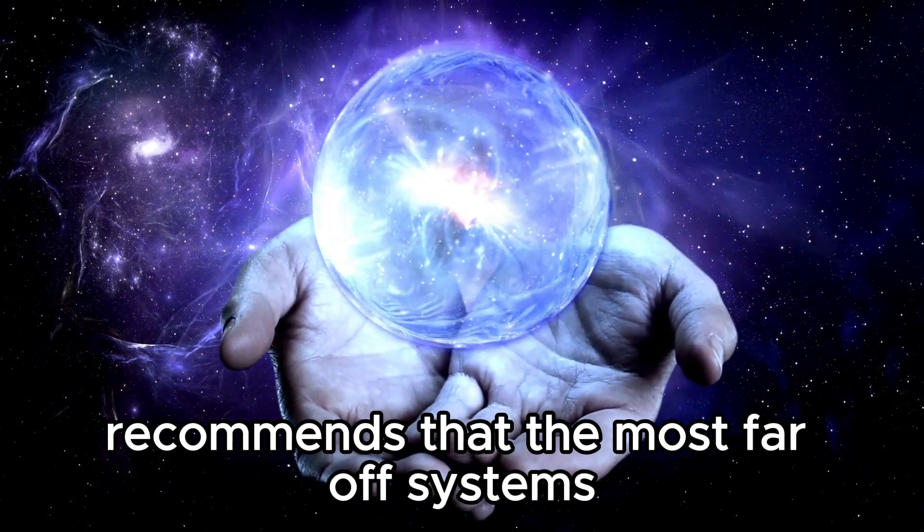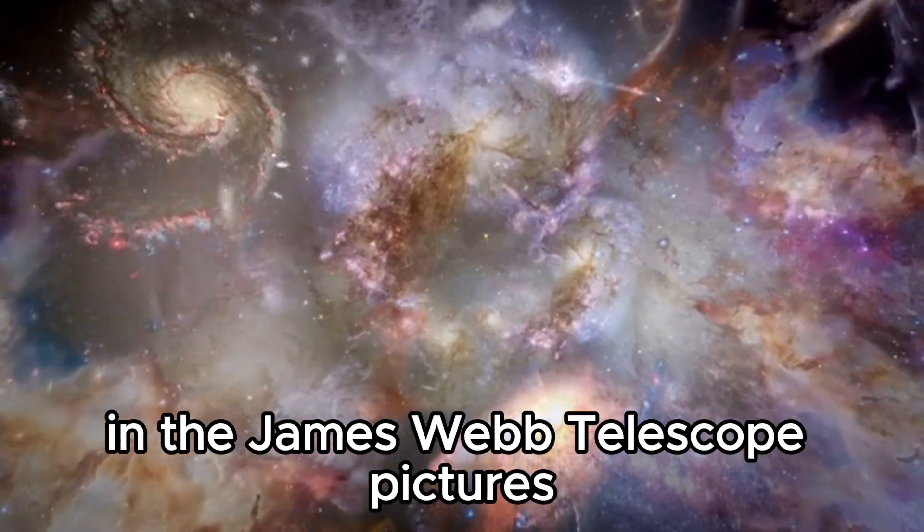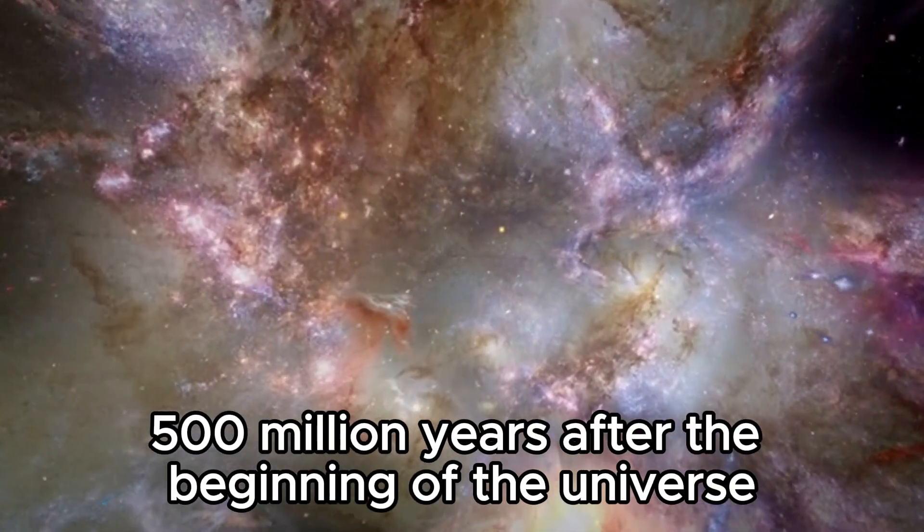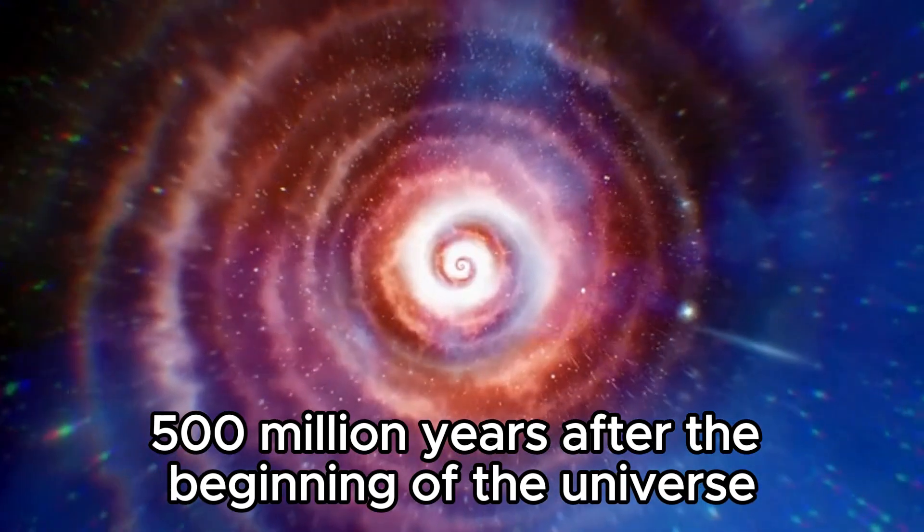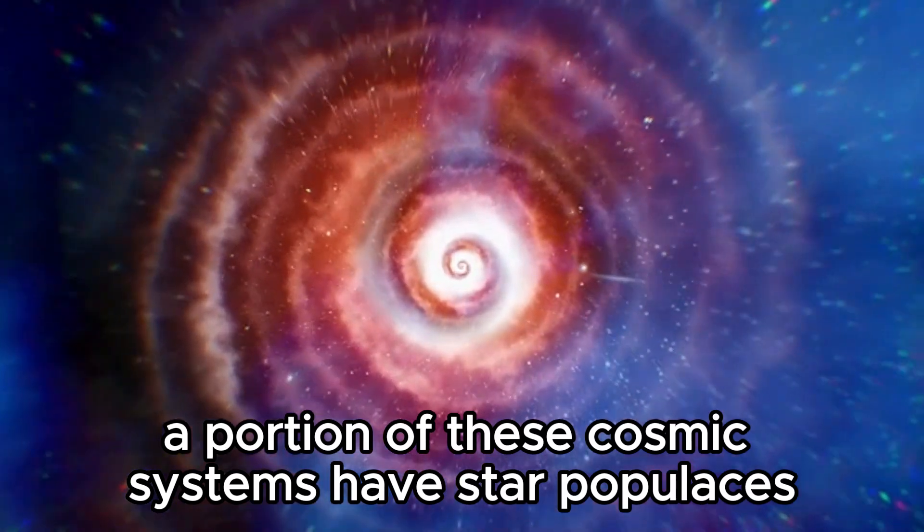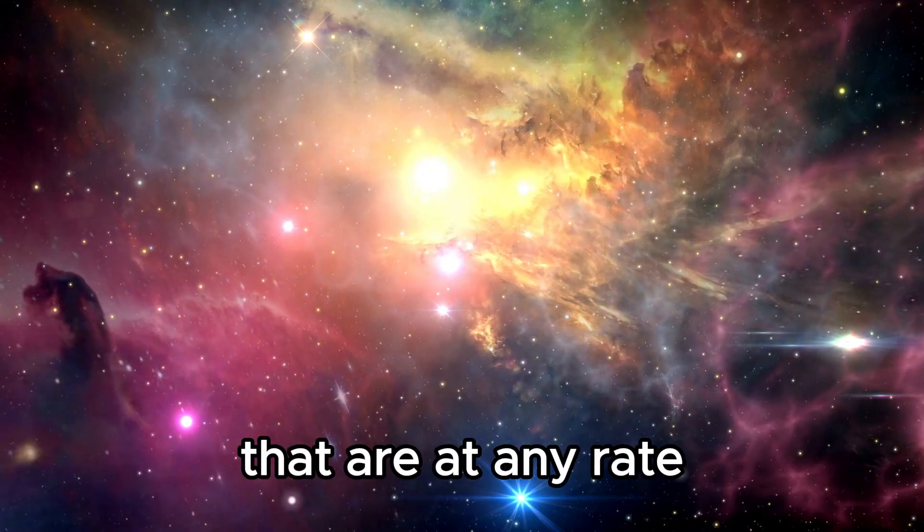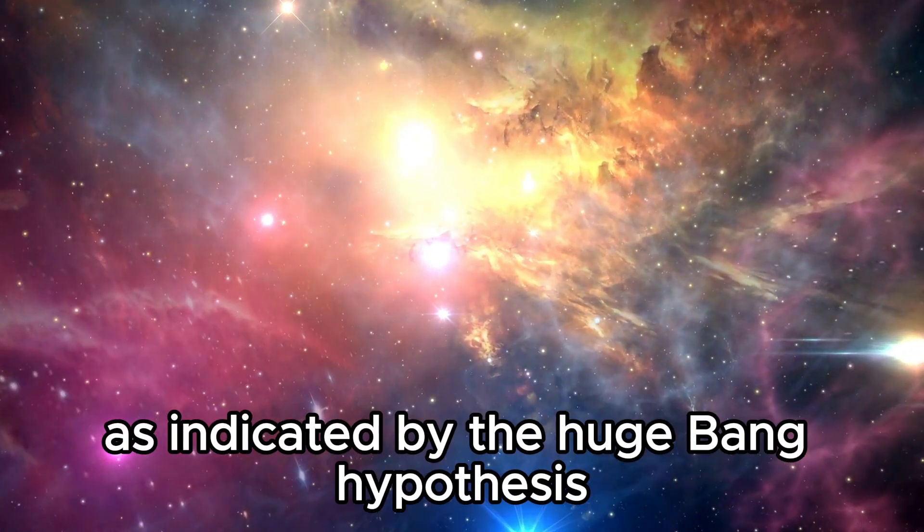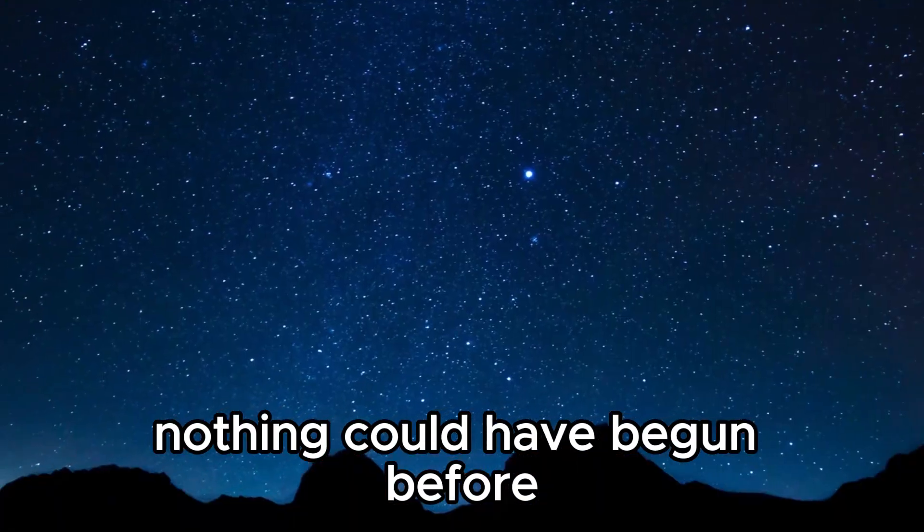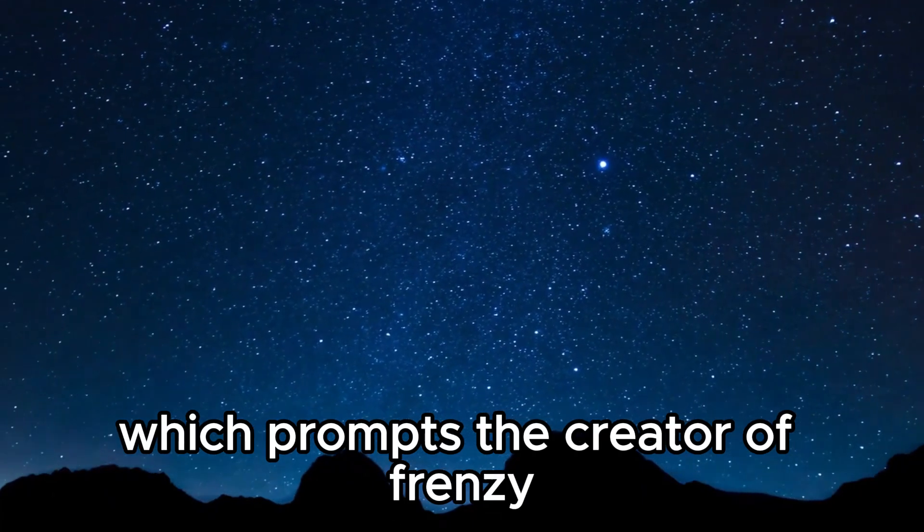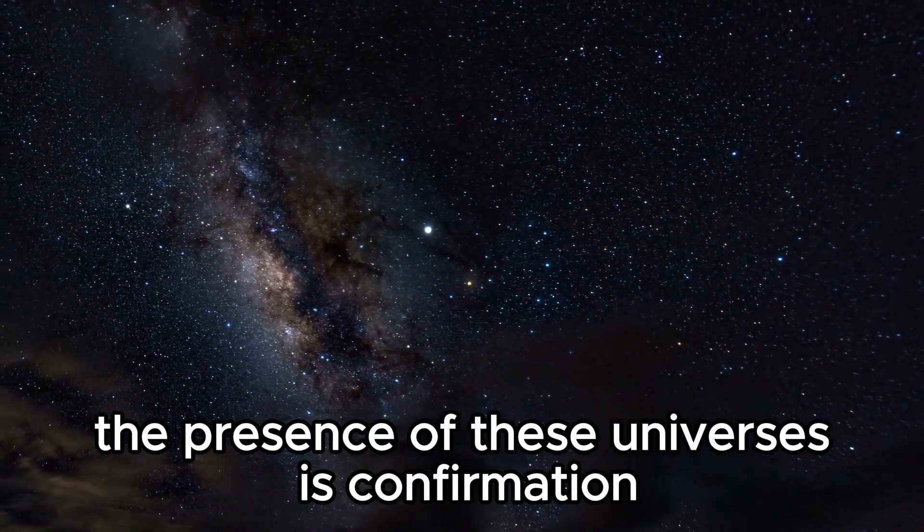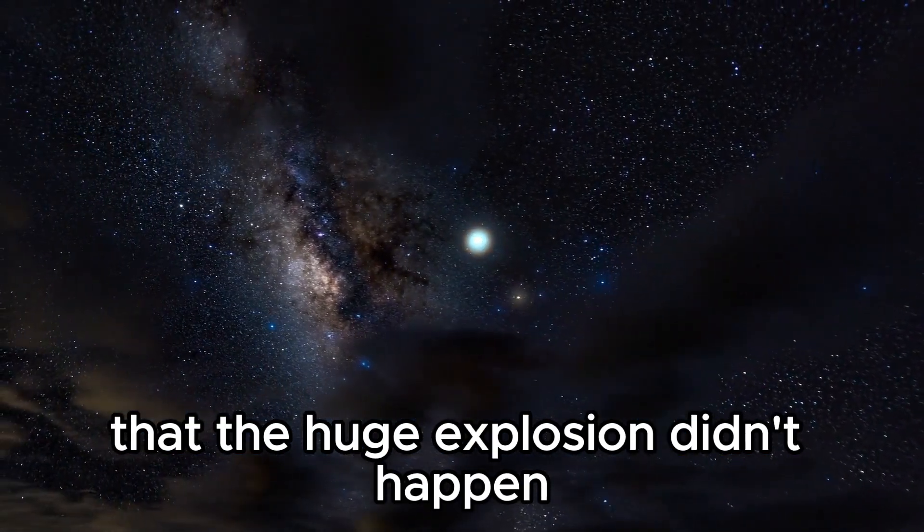Furthermore, the Big Bang theory suggests that the most distant galaxies in the James Webb Telescope pictures look as they did 400 to 500 million years after the beginning of the universe. However, some of these galaxies have star populations that are at least a billion years old. According to the Big Bang theory, nothing could have started before, which prompts some to believe that the presence of these galaxies is proof that the Big Bang didn't happen.